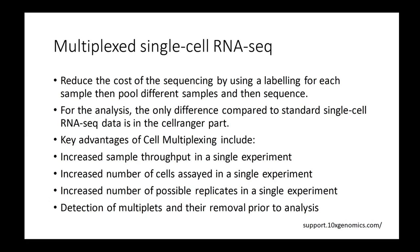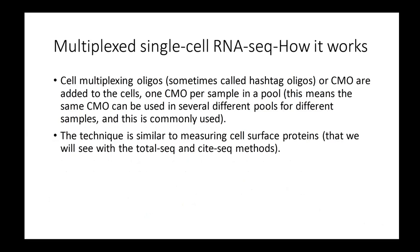The most interesting advantage is that it enables you to detect multiplets more easily and remove them prior to the analysis. You have cell multiplexing oligos — sometimes also called hashtag oligos or CMOs — that are added to the cells. You therefore have one CMO per sample in a pool, meaning the same CMO can be used in several different pools. This technique is similar to measuring cell surface proteins used in Total-seq or CITE-seq.